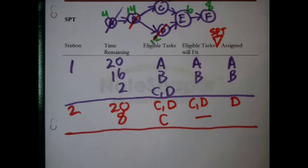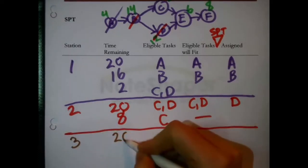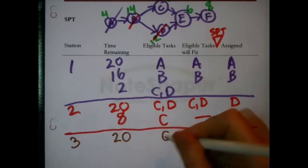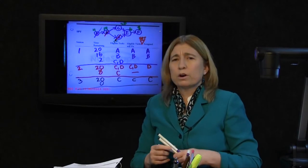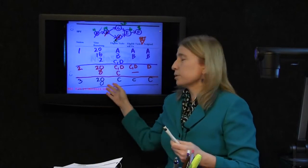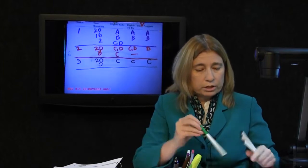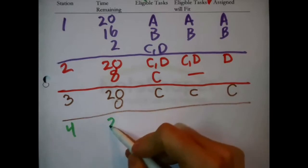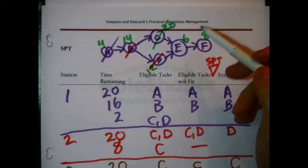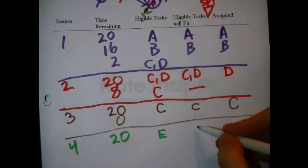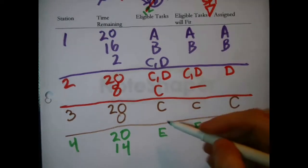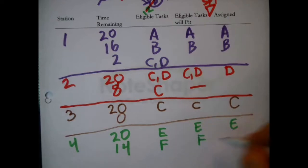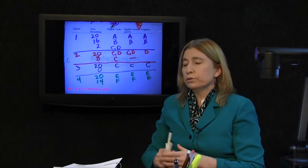Time for the third workstation. It doesn't really matter which rule you're using — task C will always need its own private workstation because it is exactly the same length as the cycle time. There will never be a situation where it fits together with another task. So the third workstation does C and only C. Fourth workstation: 20 seconds remaining; C is done so E becomes eligible, E is assigned. E is only 6 seconds long, leaving 14 seconds. F becomes eligible and fits, so E and F are both at this last workstation.